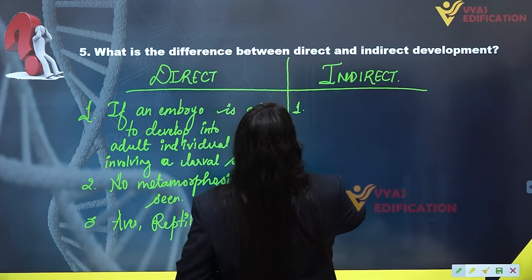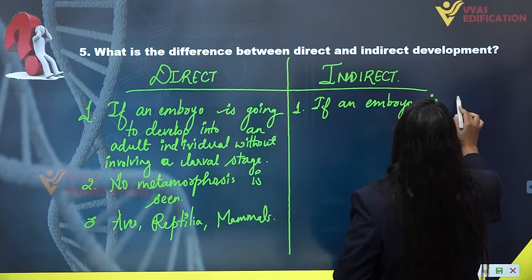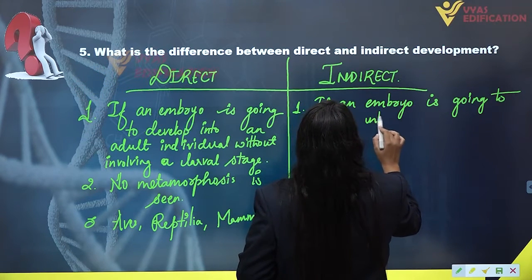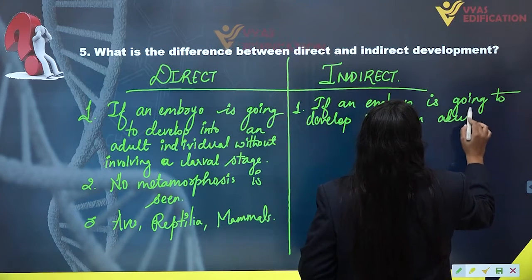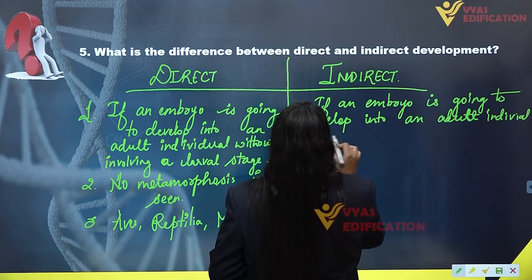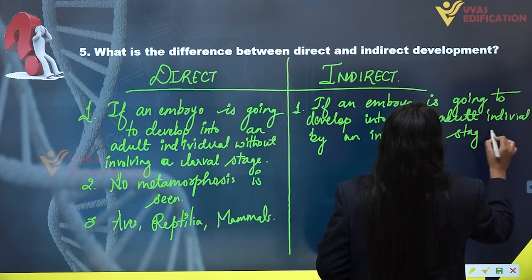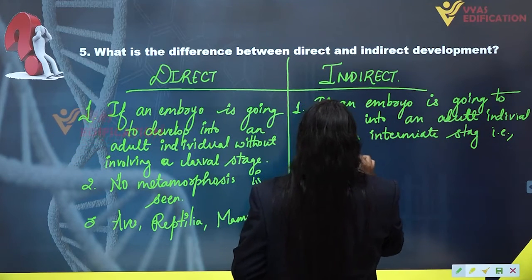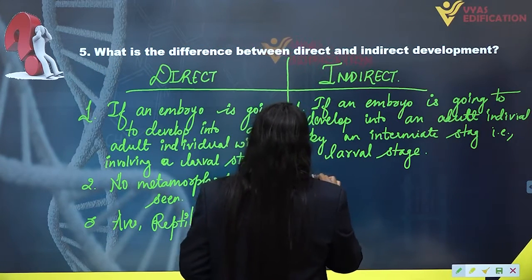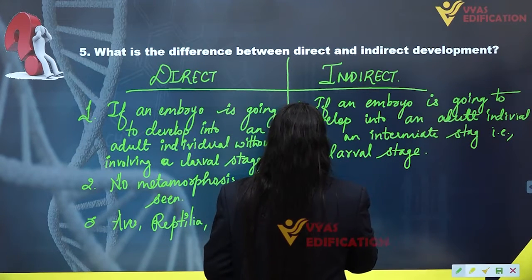If we talk about indirect development, then if an embryo is going to develop into an adult individual by an intermediate stage — that is a larval stage — then this kind of development is said to be indirect development. Obviously, if the larva is present, it has different food requirements, and there will be metamorphosis seen in the animals that exhibit indirect development.